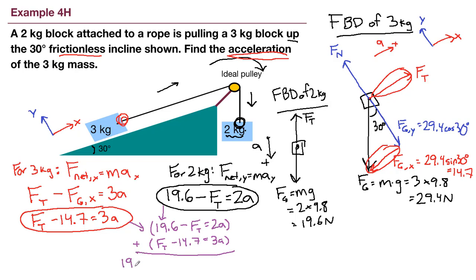So 19.6 minus tension plus tension minus 14.7 and then separately everything on the right. Two a plus three a. All right. Running out of space a little bit. But over here, if we look the negative tension and the positive tension cancel out.